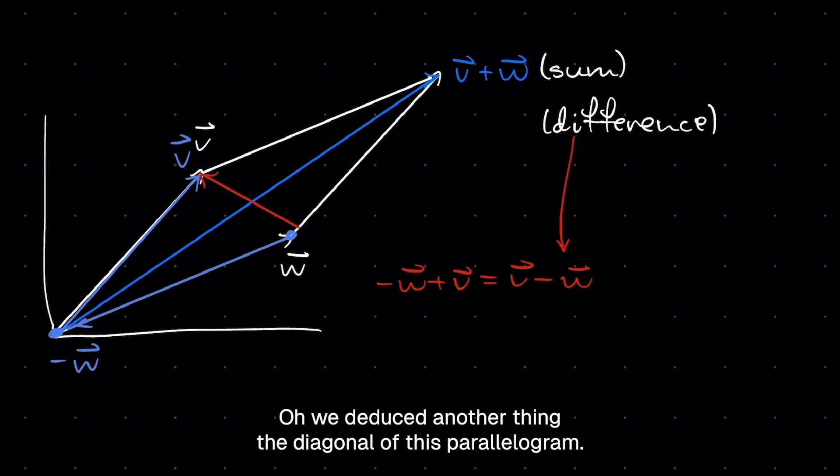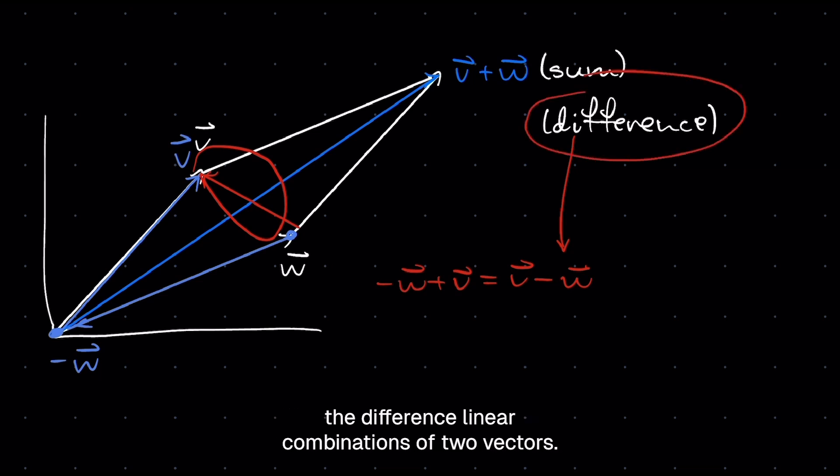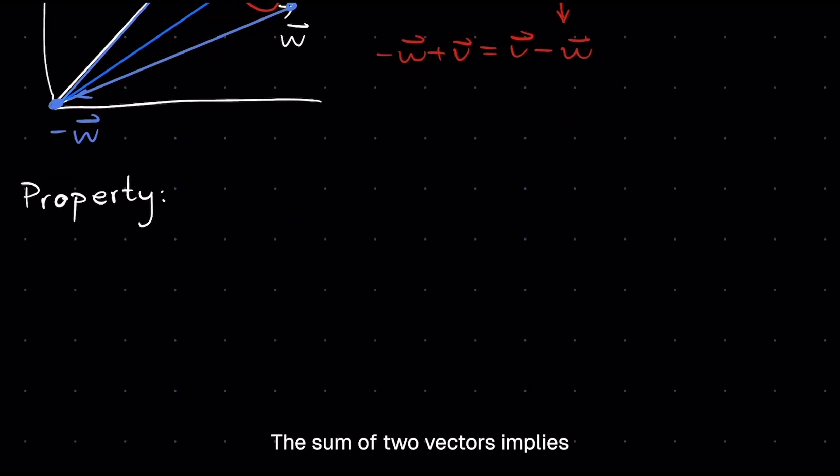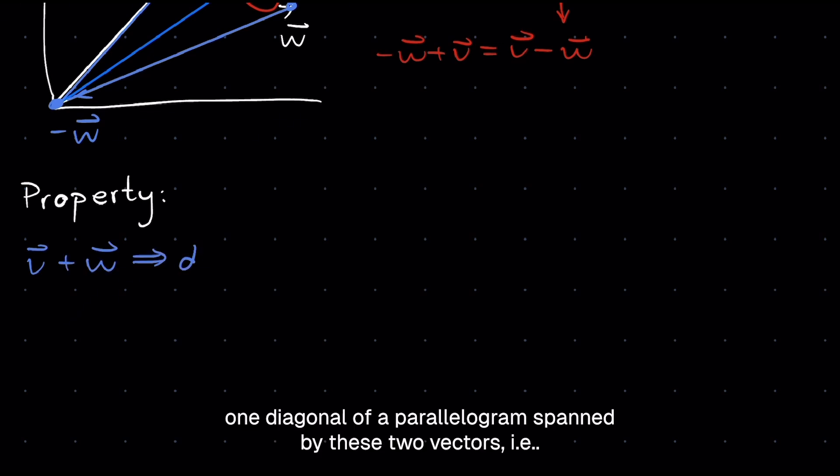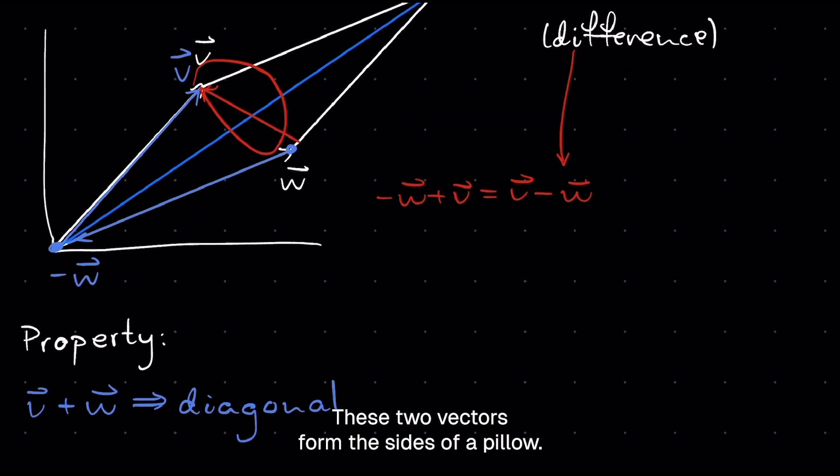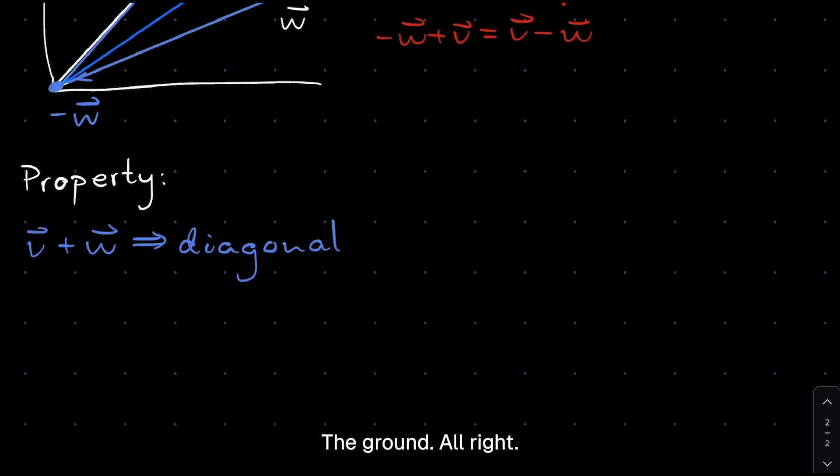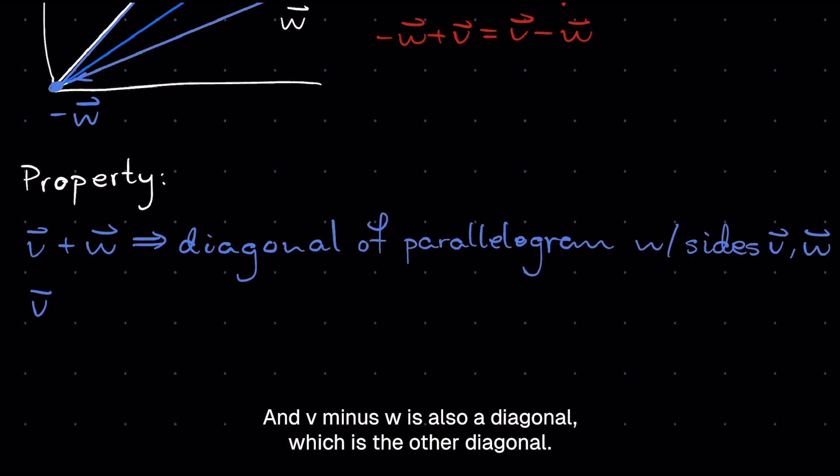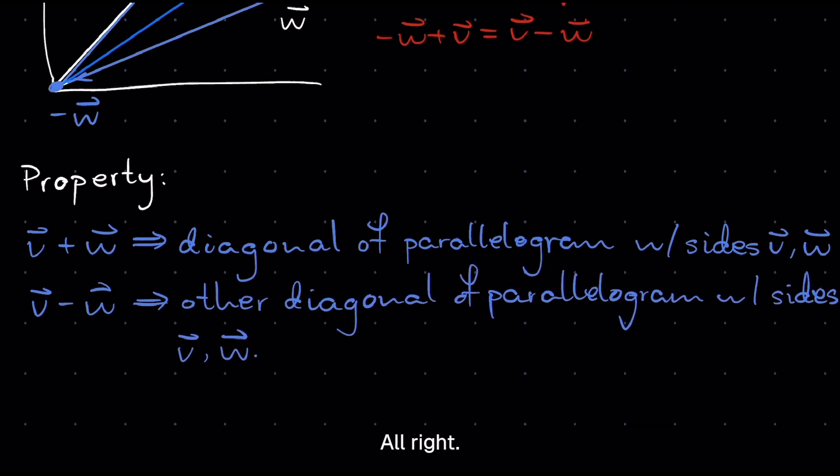Oh, we deduced another thing. The diagonal of this parallelogram, the second diagonal, is in fact the difference linear combination of two vectors. And thus, we can write a property. The sum of two vectors implies one diagonal of a parallelogram spanned by these two vectors, i.e. these two vectors form the sides of a parallelogram. And V minus W is also a diagonal, which is the other diagonal.